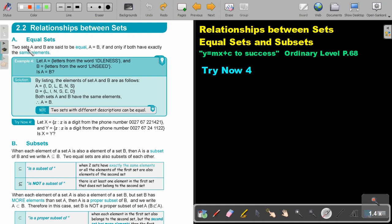Equal sets. Two sets A and B are said to be equal, A equals B, if and only if both have exactly the same elements. Let's look at an example. Let A be the letters from the word idleness and B the letters from the word linseed. Is A equal to B?